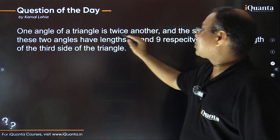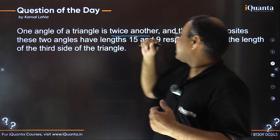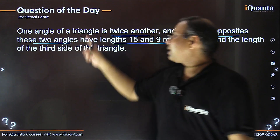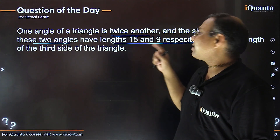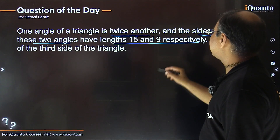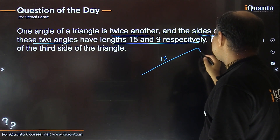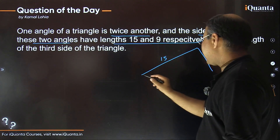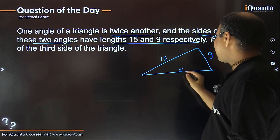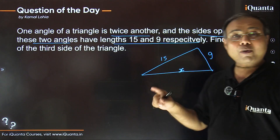One angle of a triangle is twice another — they are in the ratio 1 to 2, so the angle is double. The sides opposite these two angles have lengths 15 and 9 respectively, where the smaller angle has the smaller opposite side. Let's draw this: the longer side is 15, the shorter is 9, and the third side which we need to calculate, let it be X.